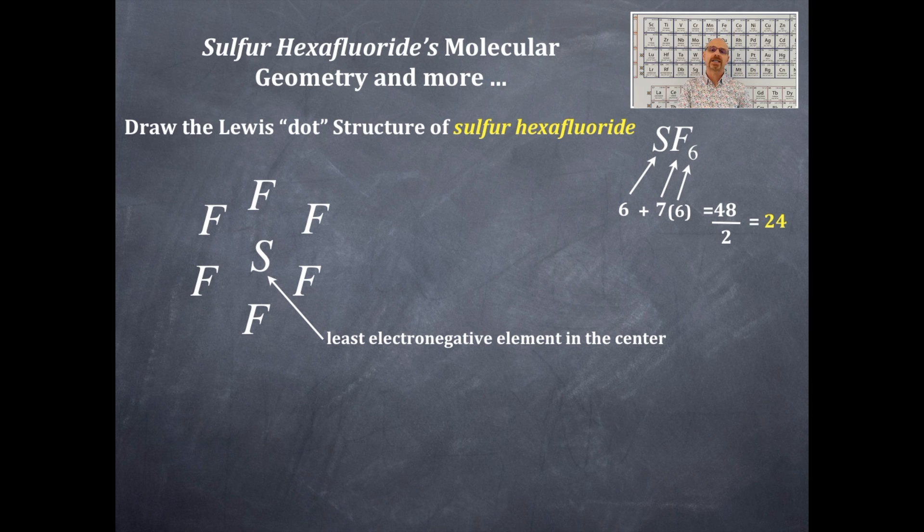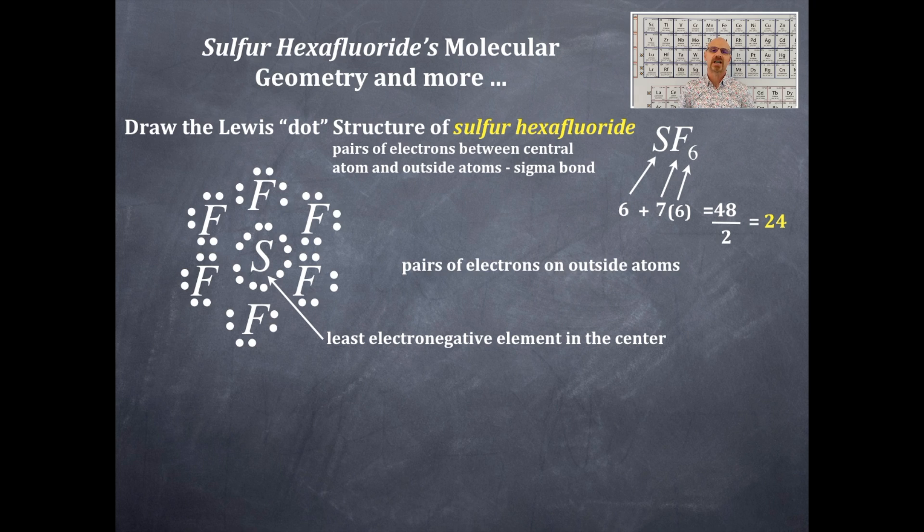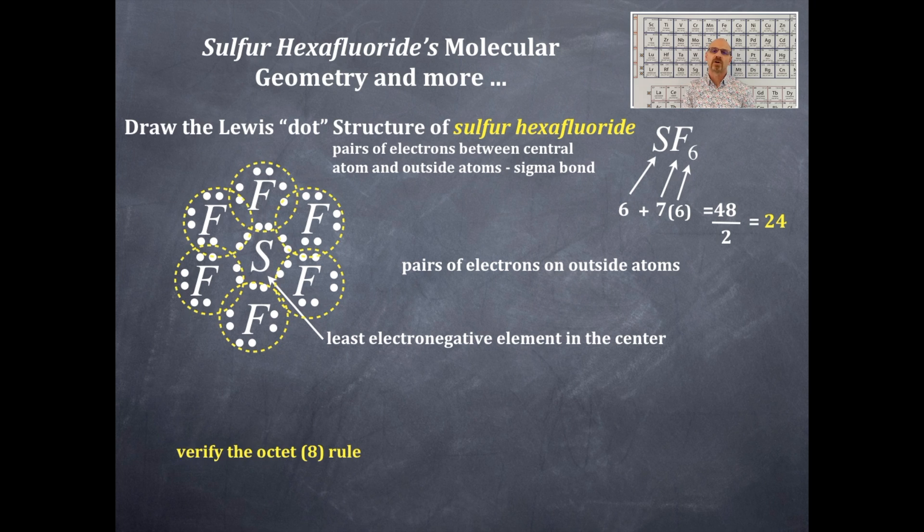So we're gonna place a pair of bonding electrons between the central element and the outside elements and that's what we've done there. We still have more electrons. We're gonna place electron pairs around the fluorine so that we get an octet around each fluorine and that's what I've done right there. We're gonna verify the octet rule for each of the fluorines because it is period two and it must obey the octet rule and there it does.